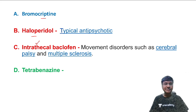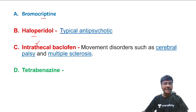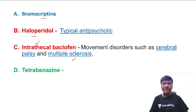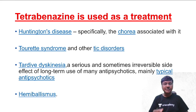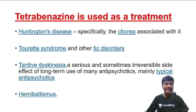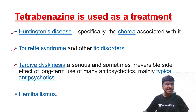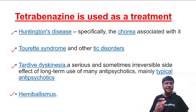Intrathecal baclofen is a skeletal muscle relaxant used in cerebral palsy and multiple sclerosis, and can also be given in hemibalismus. Tetrabenazine is used in many involuntary movement conditions including Huntington's chorea, Tourette syndrome, tardive dyskinesia, and hemibalismus.